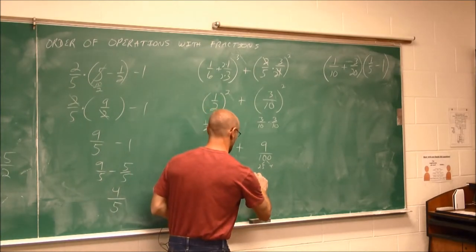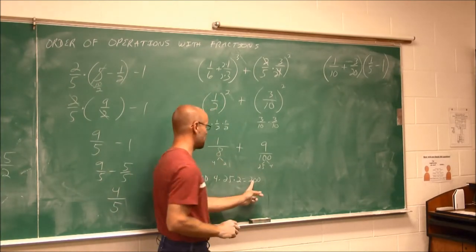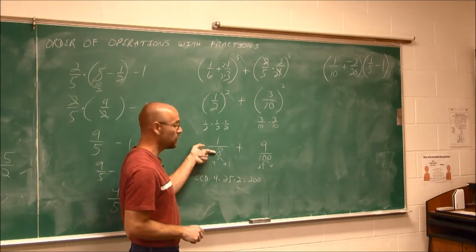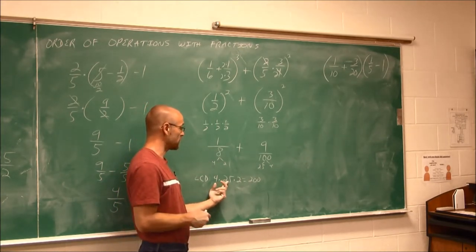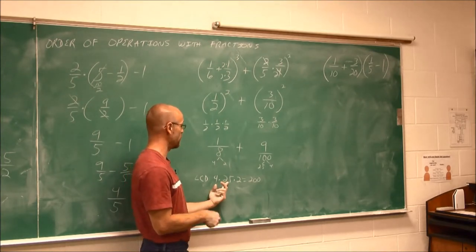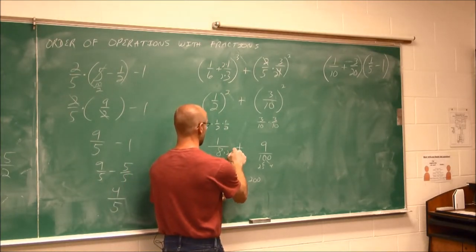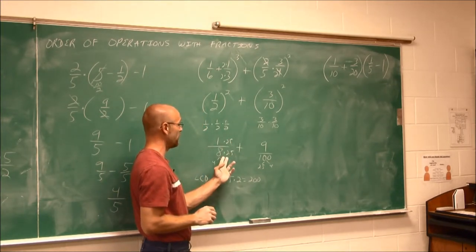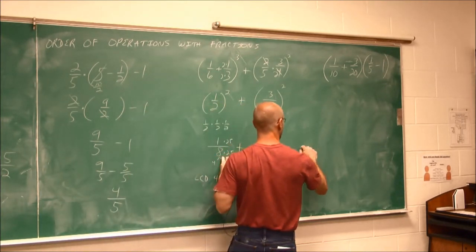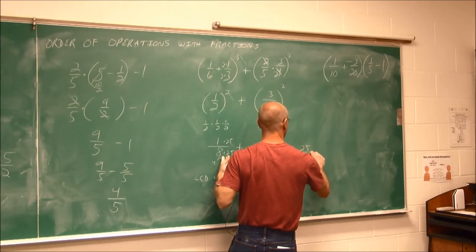So that's my LCD. So what do I have to do to this 8 to make it 200? I have to multiply it by two factors of 5, or 25. So I'm going to multiply it by 25, top and bottom. And I'm going to get 25 two hundredths.